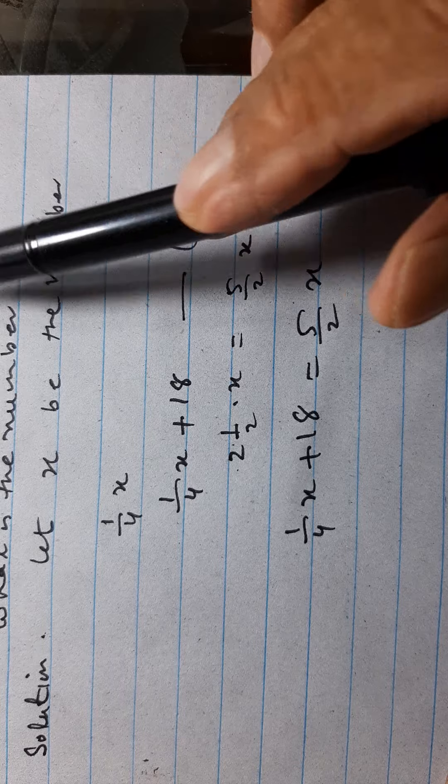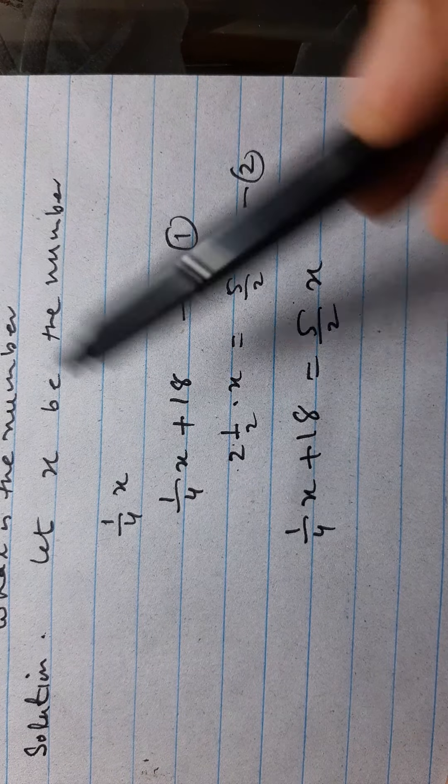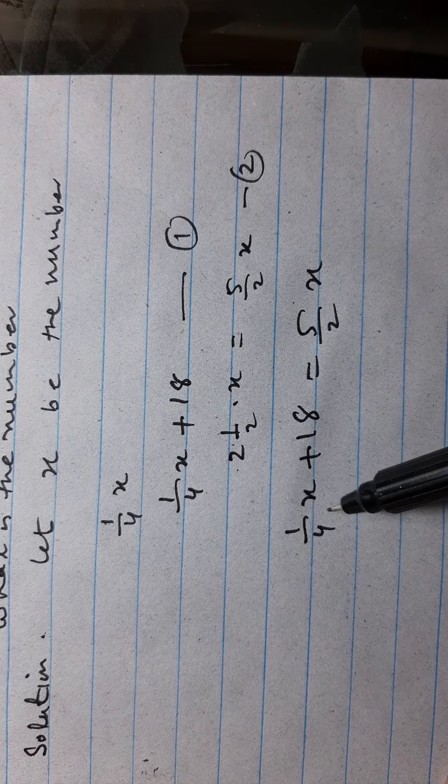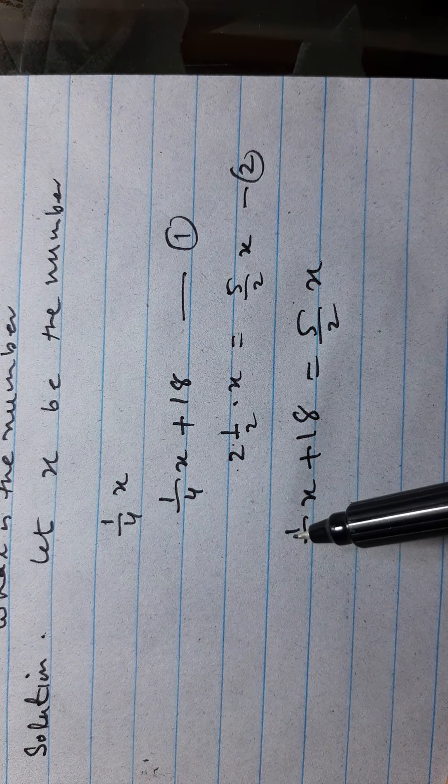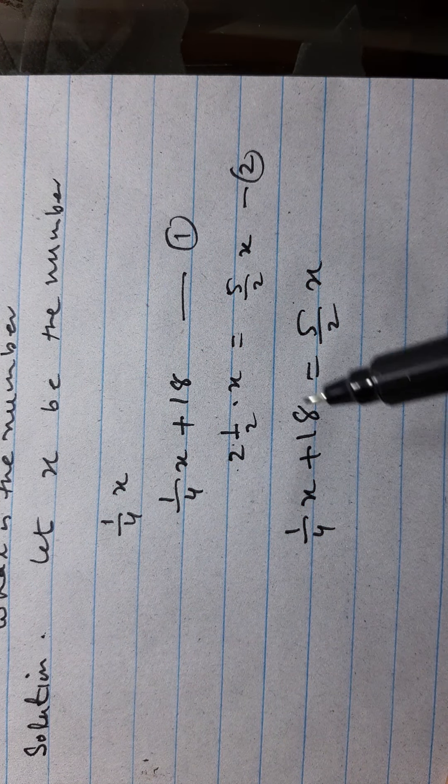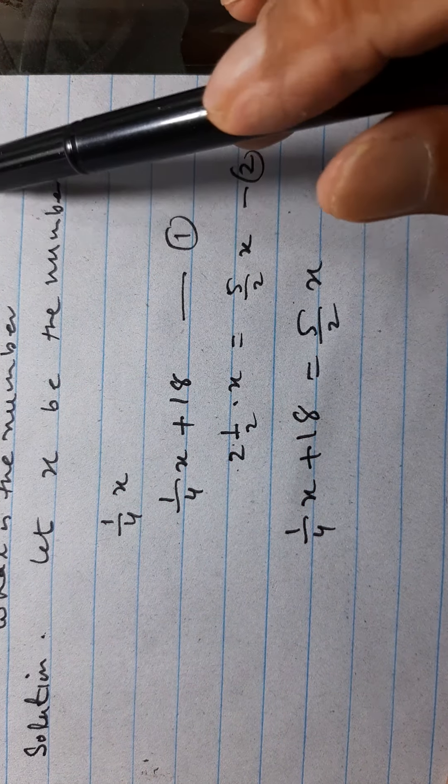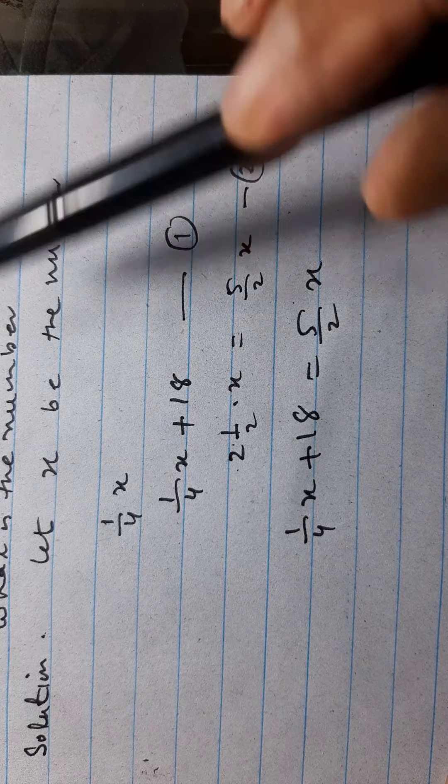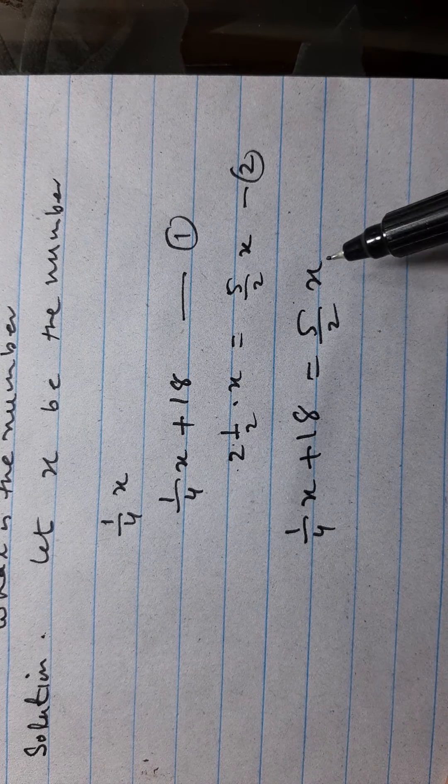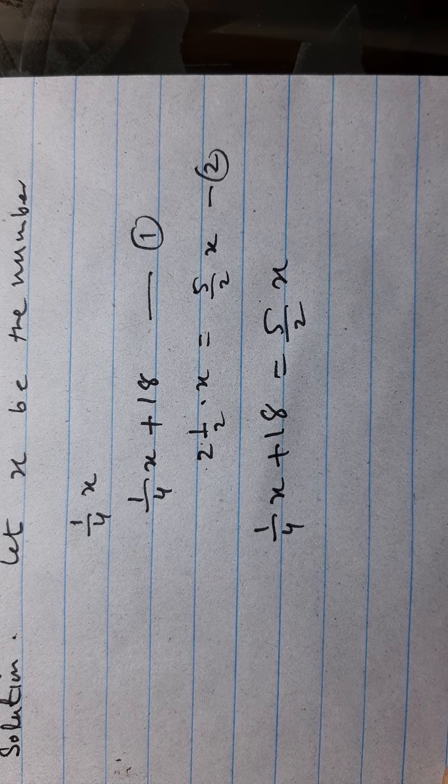If we add 18 to one-fourth of a number, number is x, one-fourth of x. If we add 18 to one over four x plus 18, now the result is two and a half times, that means five over two times of the original number. The result will be five over two x. Now we can simplify.